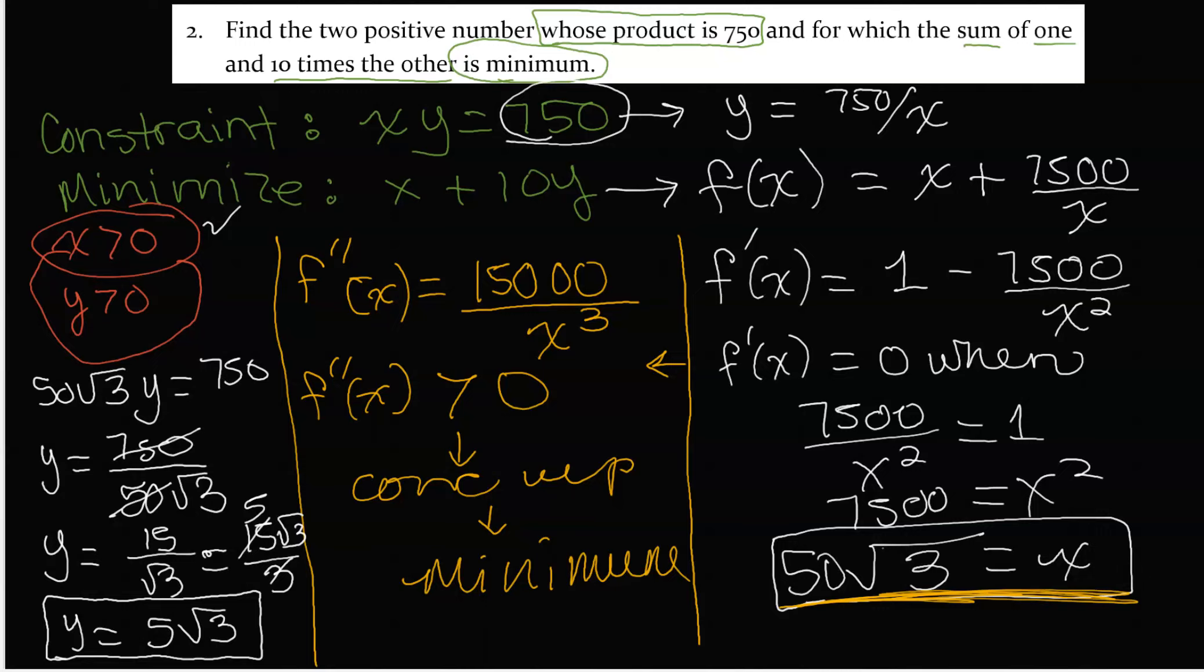50 square root of 3 and 5 square root of 3 are the two numbers whose product is 750, and whose sum of one plus 10 times the other is at its minimum.